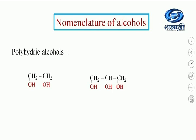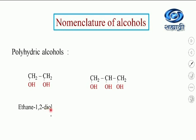Now we come to polyhydric alcohols with more than one OH group. For IUPAC nomenclature of polyhydric alcohols, we consider the carbon chain but never replace 'e' by 'ol'; we always write the alkane name as it is. For a two-carbon dihydric alcohol, we write ethane as is, give positions 1,2 of OH, and use the prefix 'di' — so the name is ethane-1,2-diol. For a three-carbon trihydric alcohol (propane), OH groups at positions 1, 2, and 3 — the name is propane-1,2,3-triol.